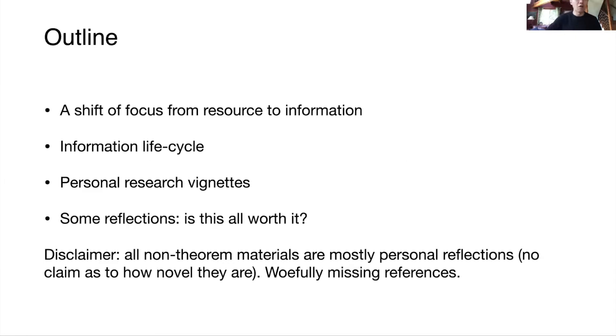Jumping right in, the outline for today is as follows. I will start with a somewhat personal reflection about what I noticed as a shift of focus from resource allocation to information. In particular, I will propose a framework called information lifecycle as a way to think of information as a central object in resource allocation problems. To contextualize that and give some examples, I will give three personal research vignettes. These are a bit short due to time constraints, so I will try to stay on the high level and not delve too much into mathematical details. Finally, I want to share some reflections on is this view of information-centric resource allocation all worth it?